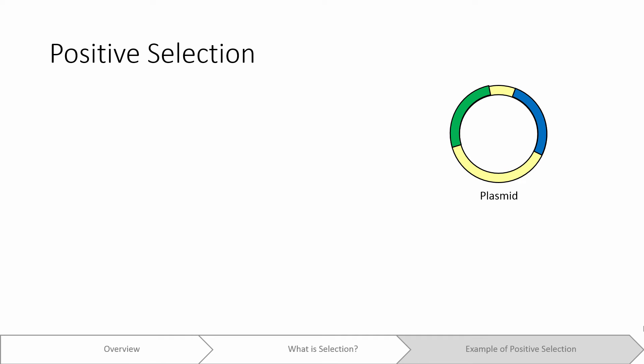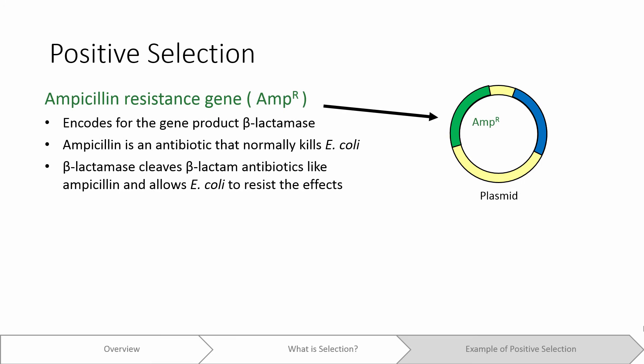Let's go over an example of positive selection first. Let's pretend that we have a vector that we want our host E. coli cells to take up through transformation. Let's pretend that our vector is a plasmid which contains the gene often denoted as AmpR, or the ampicillin resistance gene. This gene encodes for the protein product beta-lactamase. Beta-lactamase degrades beta-lactam antibiotics like ampicillin.